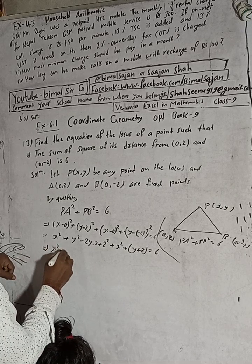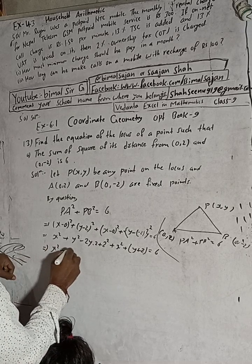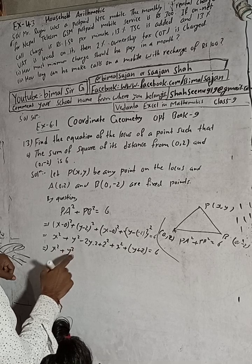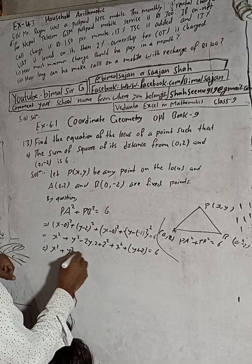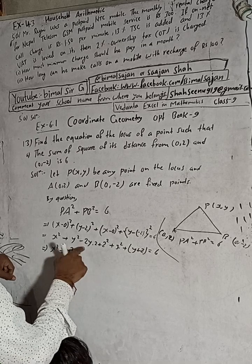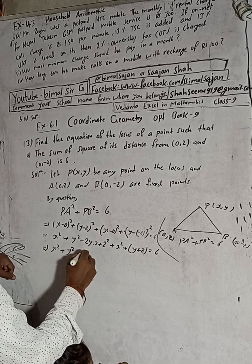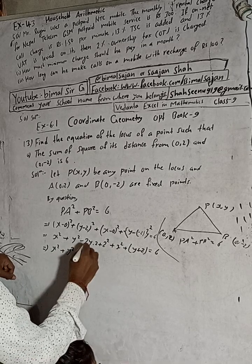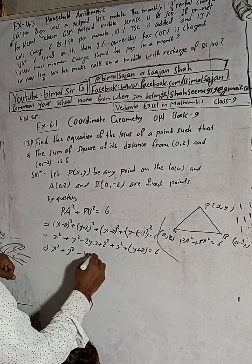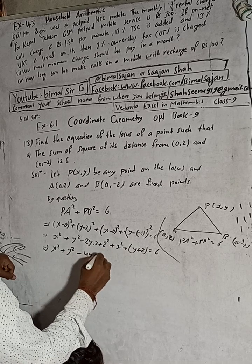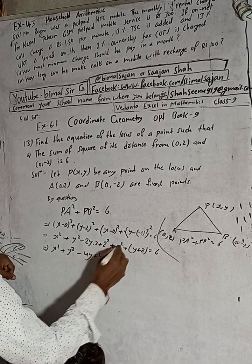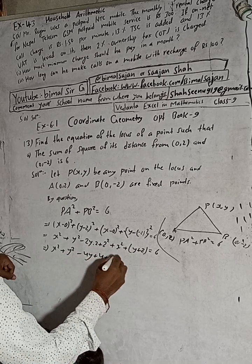Writing out all the terms: x² + y² - 4y + 4, plus x² for the PB expansion.